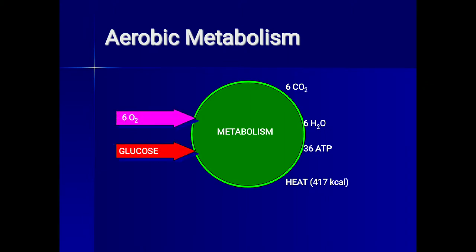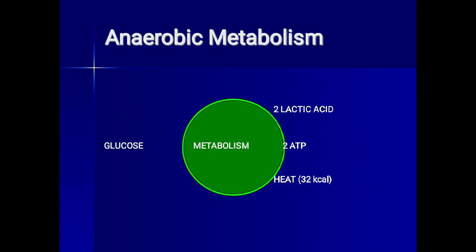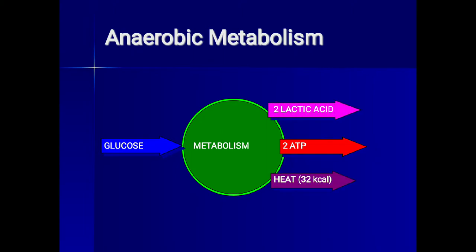Normally in aerobic metabolism, six molecules of oxygen and one molecule of glucose yield six molecules of CO2, six molecules of water vapor, 36 molecules of ATP, and 417 kilocalories of heat. In anaerobic metabolism, due to lack of oxygen, only glucose is used, producing only two molecules of lactic acid, two molecules of ATP, and just 32 kilocalories of heat.